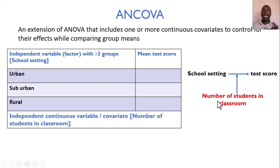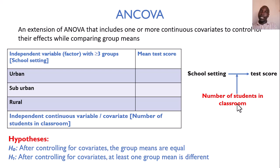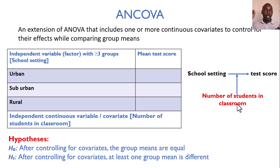Classroom size is our covariate, giving the name ANCOVA — analysis of covariance. The hypotheses here are: after controlling for the covariate (number of students in a classroom), the group means are equal; or alternatively, even after controlling for that covariate, at least one group mean is different. So for ANCOVA you have an independent categorical variable influencing a numerical outcome, plus a numerical independent variable that may confound this relationship.